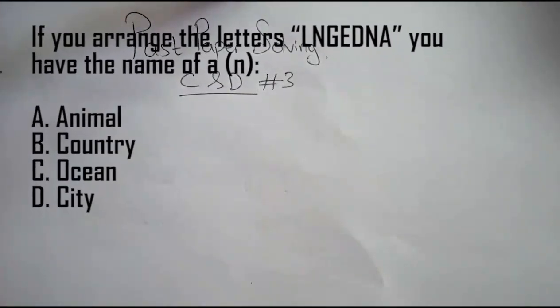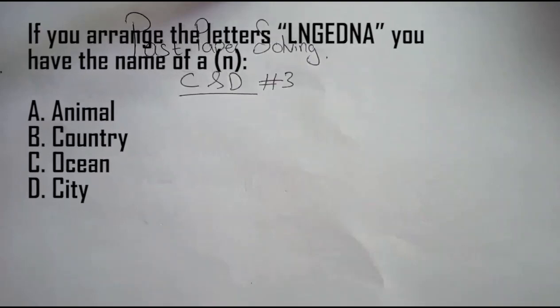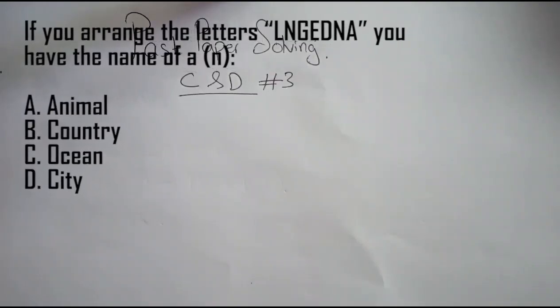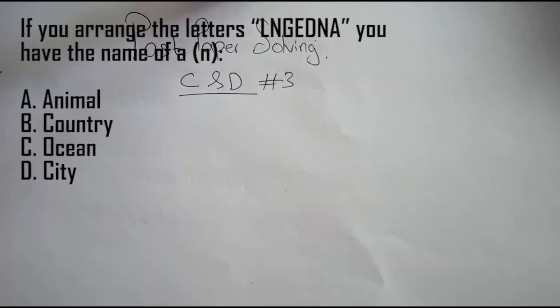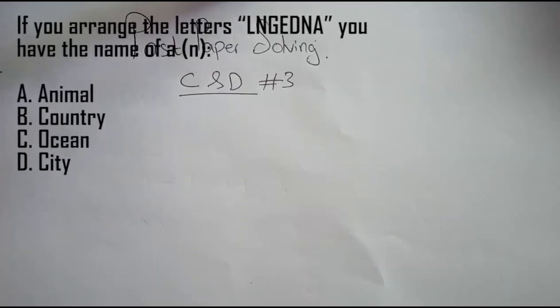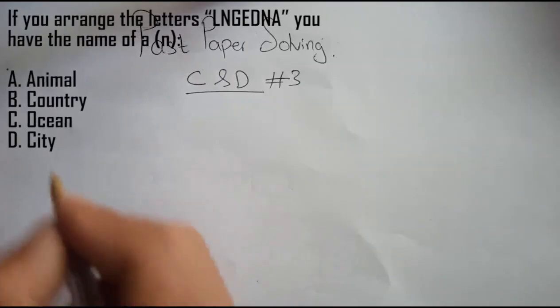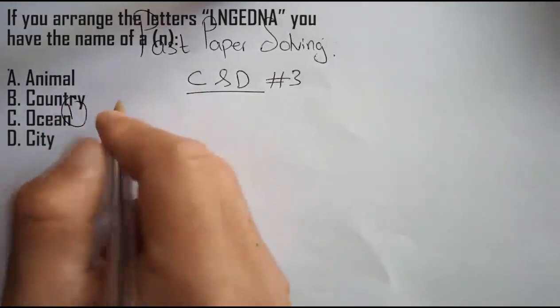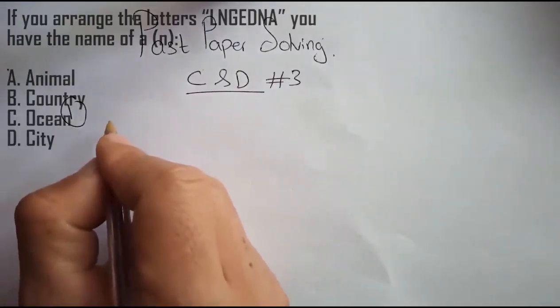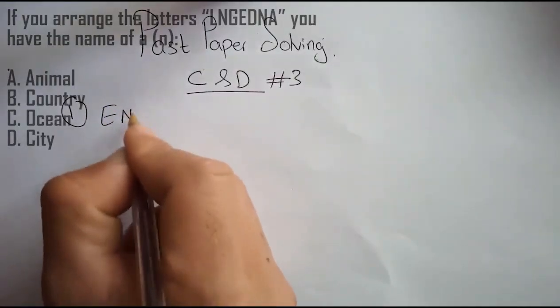The question will be appearing on the screen. If you arrange the letters L-N-G-E-D-N-A, you have the name of an animal, country, ocean, or city.